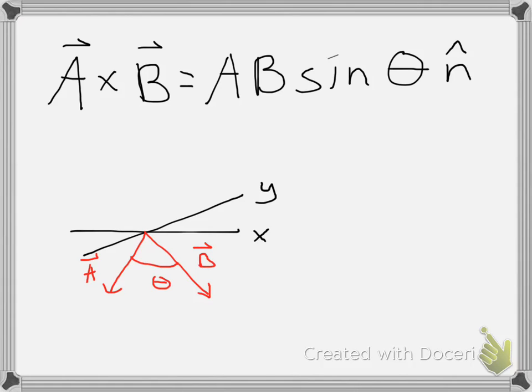In front of you is the definition of the cross product. A cross B, the vector A crossed into the vector B, yields a vector whose magnitude is the magnitude of A times the magnitude of B times the sine of the angle between them. Remember in our definition of the dot product it was the cosine, but this time it's the sine.